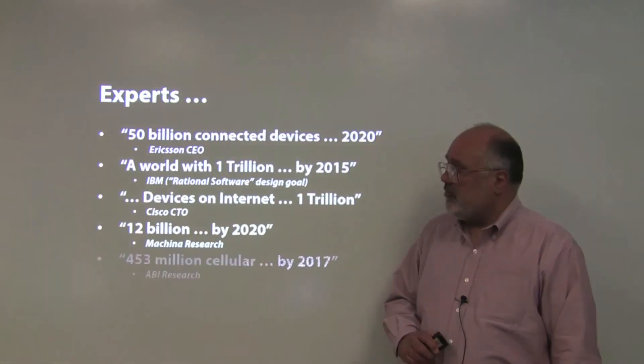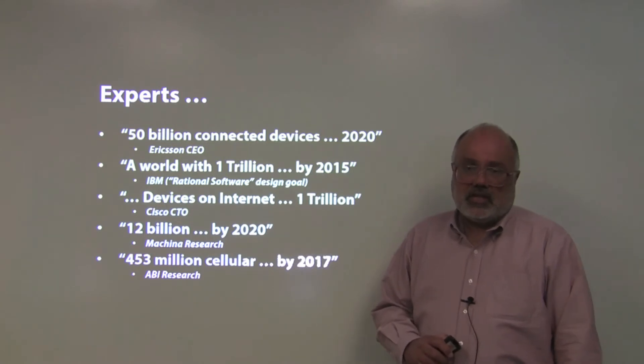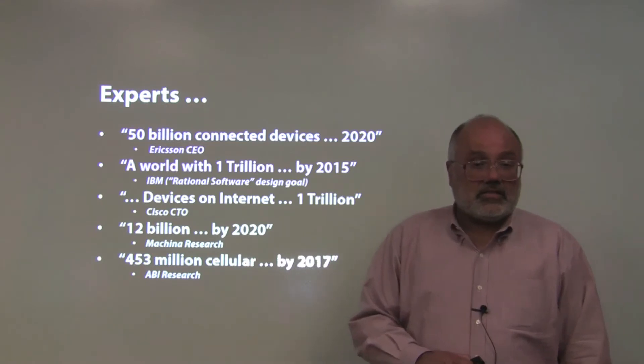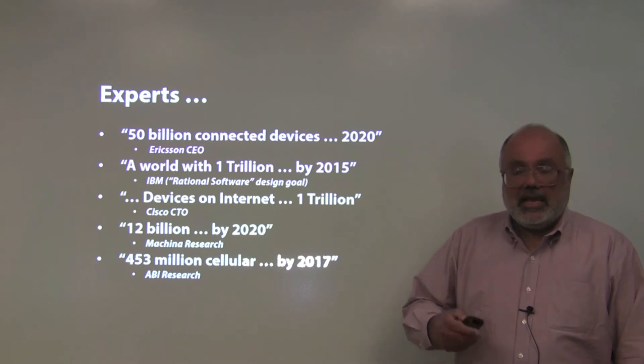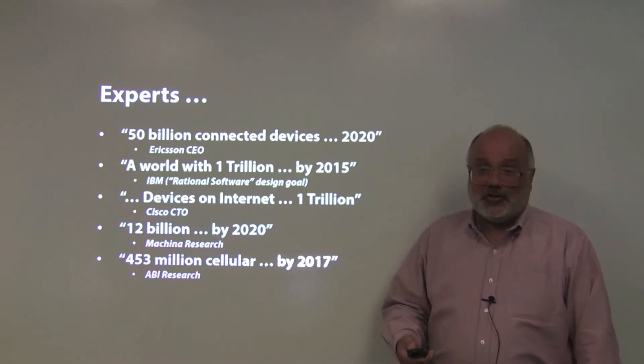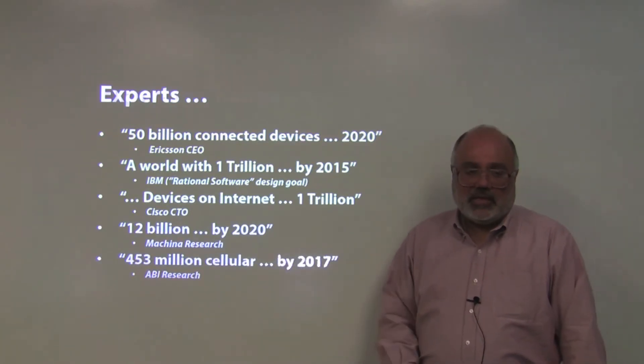What are the experts saying for the future? Billions of connected devices. The Ericsson CEO says that by 2020, you'll see 50 billion connected devices. The Cisco CTO says the devices on the internet are already at a trillion or will be within the next year or two. ABI research says that by 2017, you should see over 450 million cellular devices being used for M2M. That's pretty phenomenal growth. How do you get there? Whether you believe a particular number or not is not important. All of them are large, and you have to be able to deal with that.